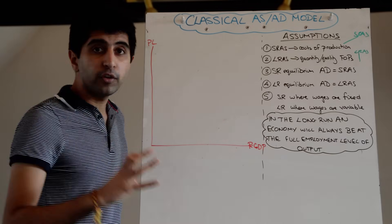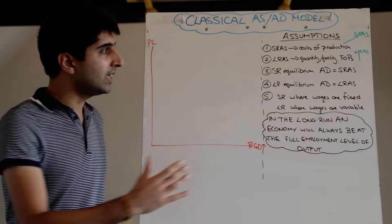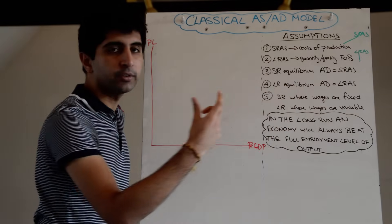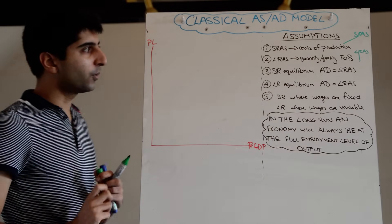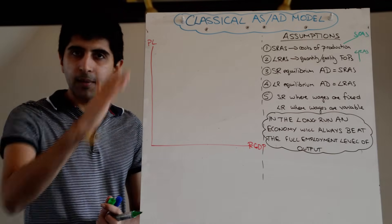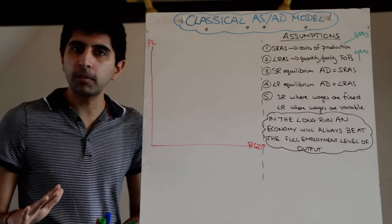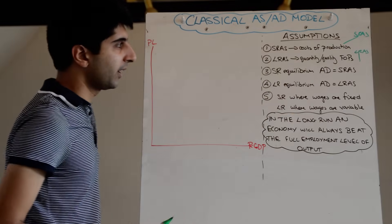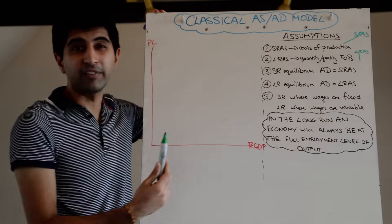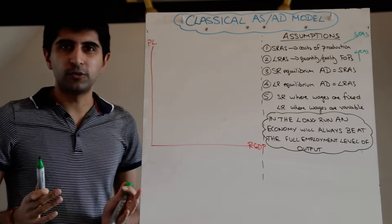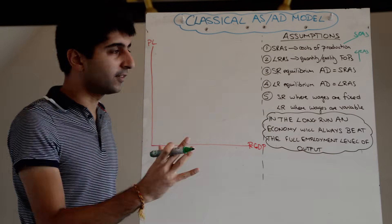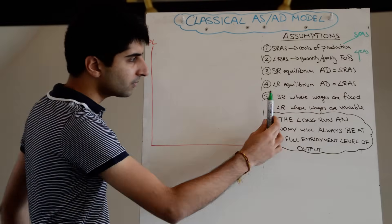There are therefore two different equilibriums. We can have a short run equilibrium where AD equals SRAS, and a long run equilibrium where AD equals LRAS. Both schools of thought agree on AD — it's simply C plus I plus G plus X minus M, downward sloping. The difference comes entirely in the aggregate supply curve. Keynes would disagree with the short run/long run distinction and call it rubbish.